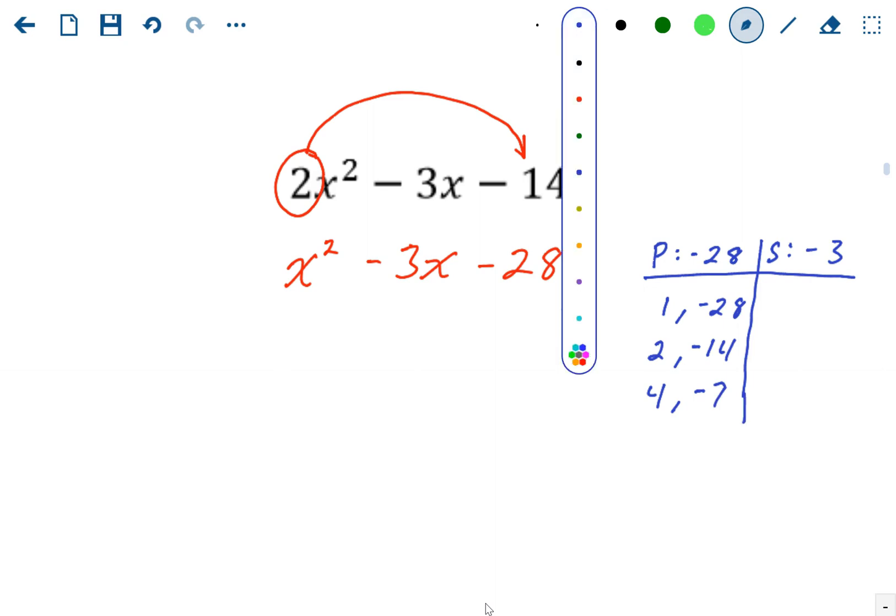All right, so our winner, we've got to see which one adds up to negative 3. This does not. 2 and negative 14 does not. And 4 plus negative 7 is negative 3. So those are going to be our 2.